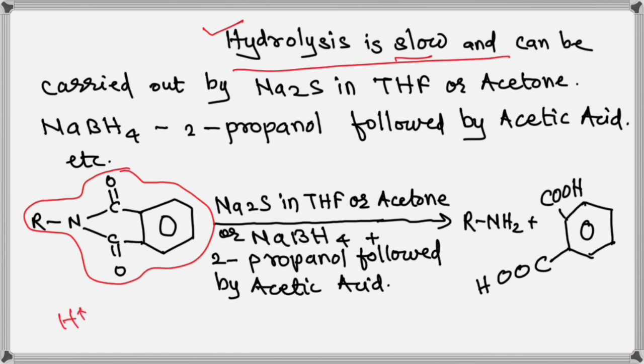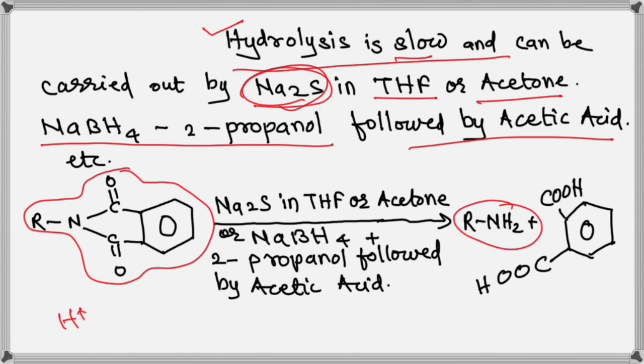Also, it can be carried out by sodium sulfide in tetrahydrofuran or sodium sulfide in acetone, or you can use another agent like sodium borohydride in 2-propanol followed by acetic acid, then it will produce primary amine.